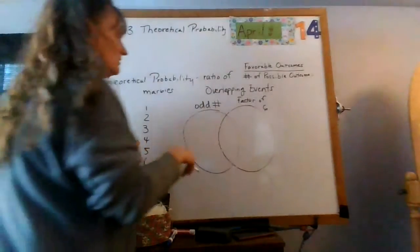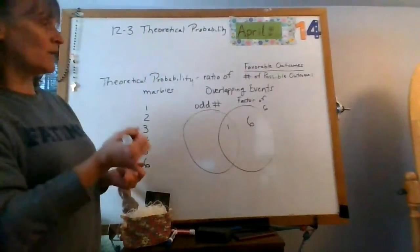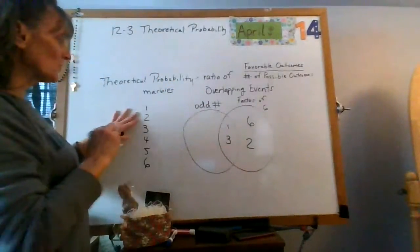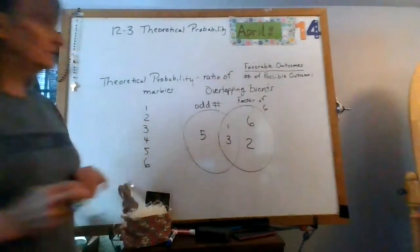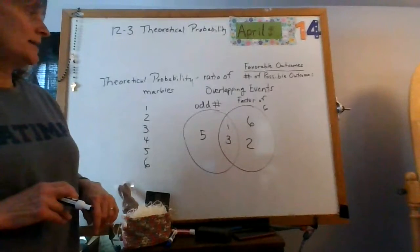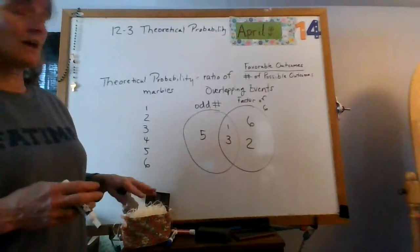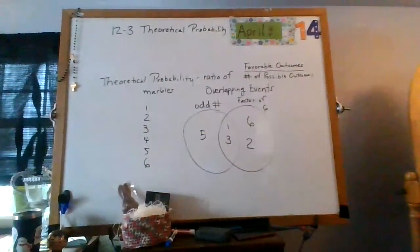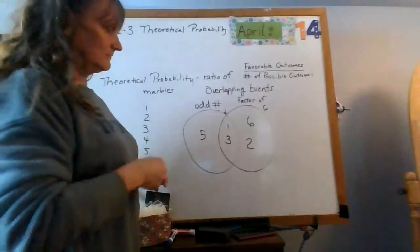Three is odd, so I'm going to put that there. And what are all my odd numbers? One, well that was already there, three and five. Okay, so my overlapping events here. One, two, three. Four doesn't even fall in any of those because it's not odd and it's not a factor of six, so it's not on there at all. The overlapping event would be my one and three. That is my overlapping event.